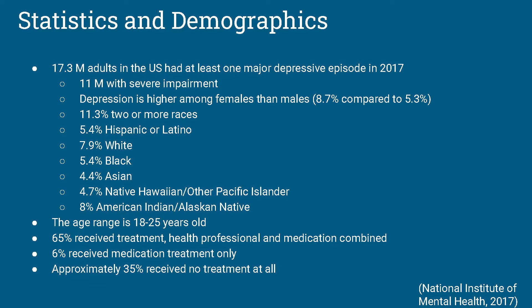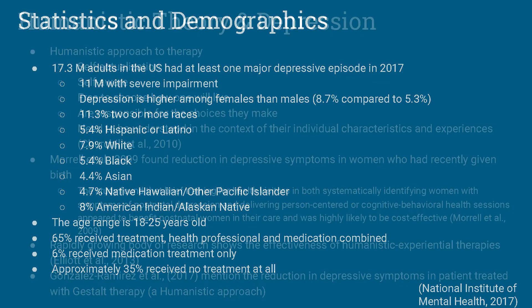A little over 17 million adults in the U.S. had at least one major depressive episode in 2017, and 11 million had severe impairment. Data shows that depression is higher in females than in males, with somewhere around a 3.4% difference. The data shows that the age range was between 18 to 25 years old, and 65% received medication and therapy combined treatment, 6% was medication treatment only, and 35% received no treatment at all.